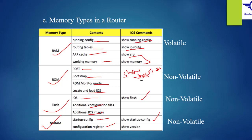There's something important to explain. RAM basically stores our running configuration. Remember, when we are configuring a device but have not saved the configuration, it will be stored in RAM. But if we save it, it will be stored in NVRAM. That's why RAM is volatile, while ROM, Flash, and NVRAM are not volatile. It's only RAM that is volatile. That's why, if you leave any configuration unsaved and then power off your device and power on again, those configurations will all be lost.